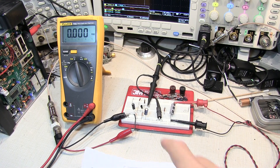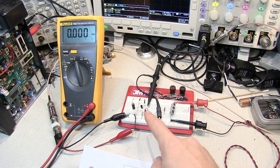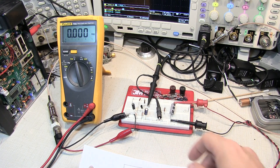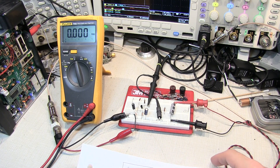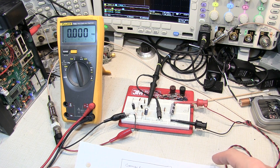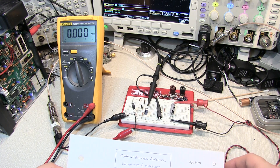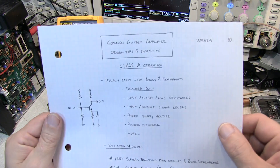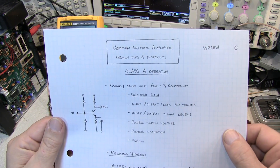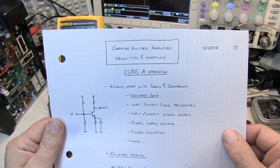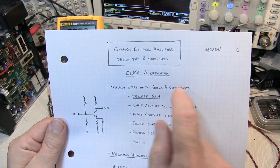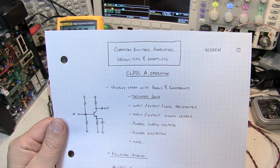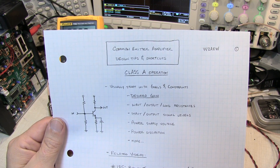Probably the most common bipolar transistor amplifier is the common emitter amplifier operating in class A. Today's video we're going to talk about some design tips and shortcuts for class A common emitter amps.